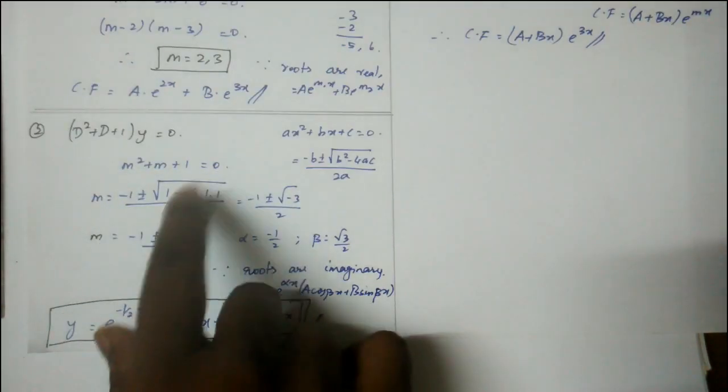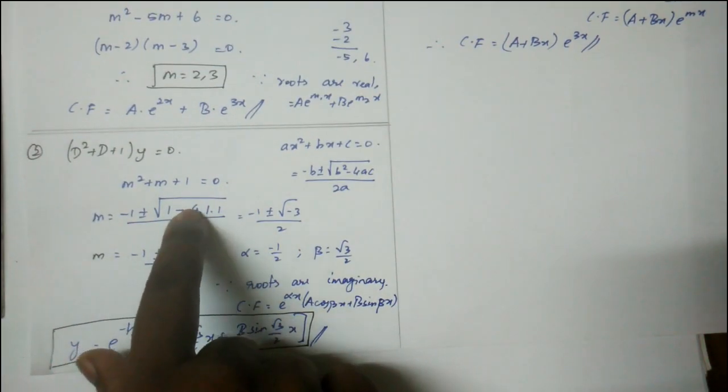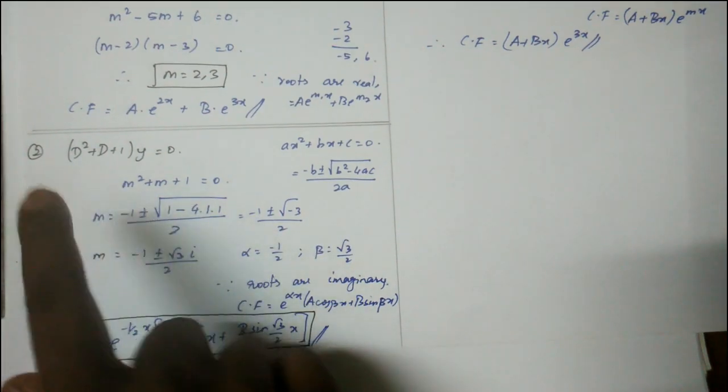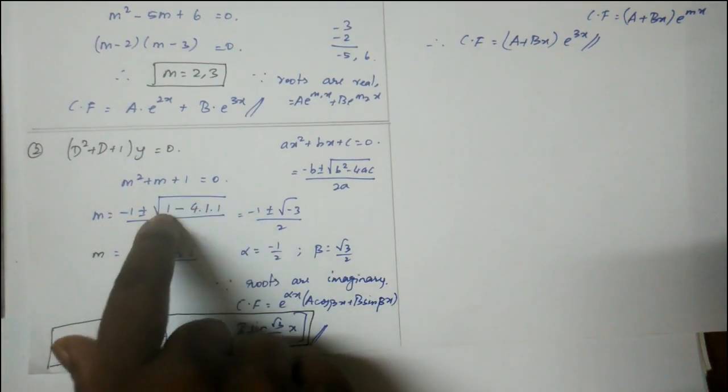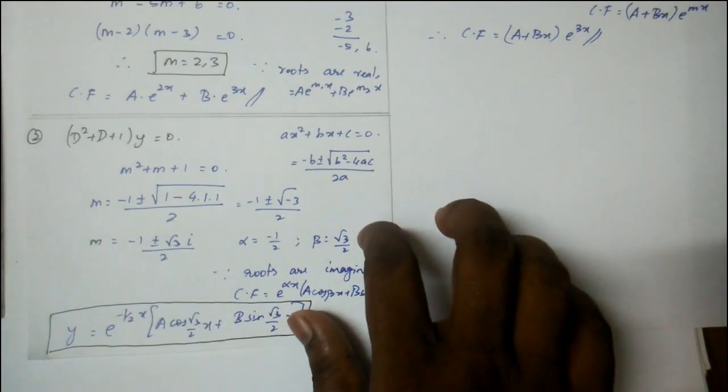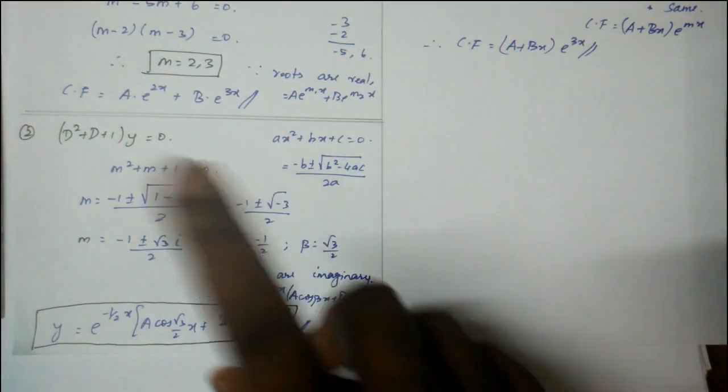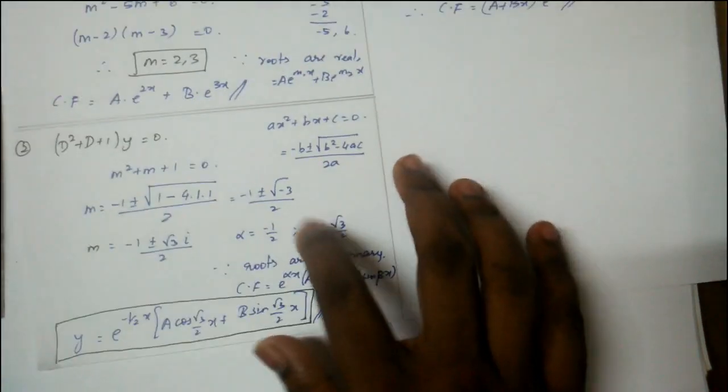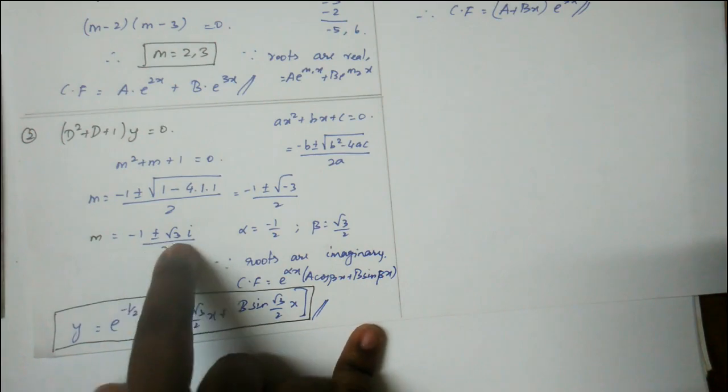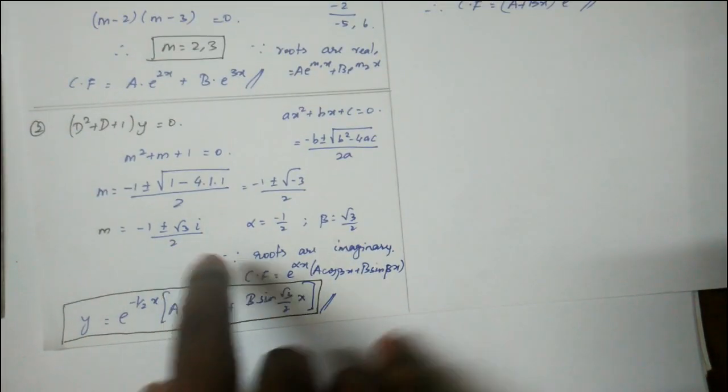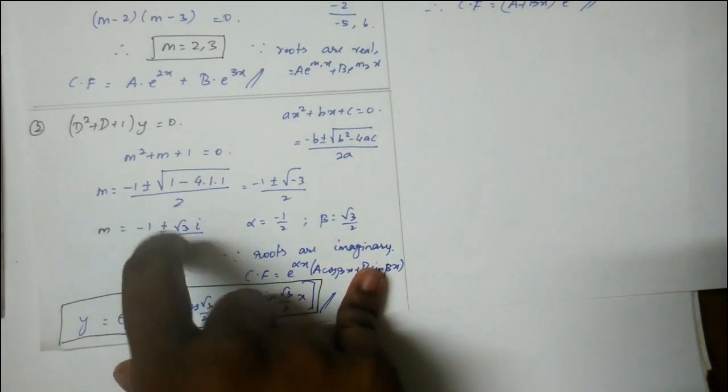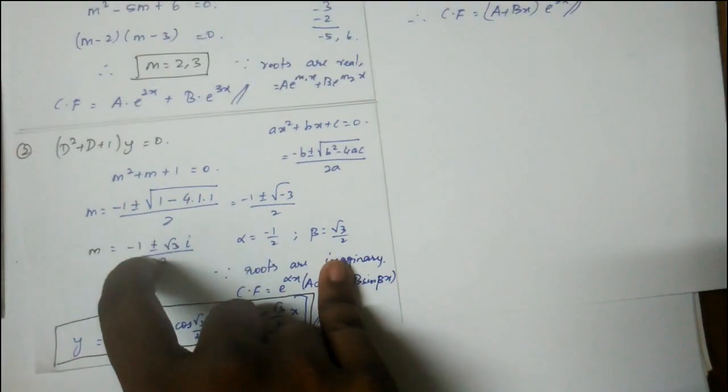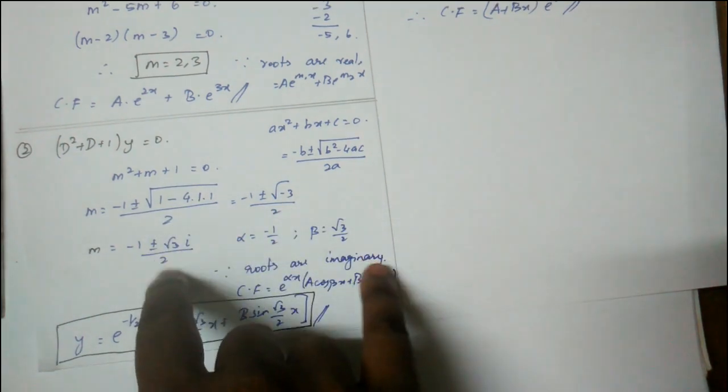If we get something like (-1 ± √(-3))/2, this becomes (-1 ± √3i)/2. Alpha is the real term, beta is the imaginary coefficient.